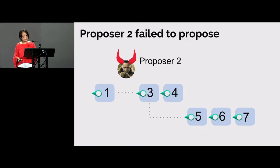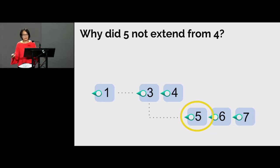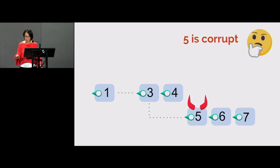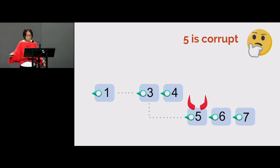What could have happened here? The most natural interpretation is that proposer five is corrupt. Even though he has seen block four notarized, he doesn't like some transaction in that block and wants to undo it, so he chooses to build from three instead. Generalizing from here, a corrupt proposer can choose to extend from some really ancient block in the past. This is problematic not only because it breaks linearity, but also because it would undo all the work done on notarized blocks in the middle — we can't just undo all that work.